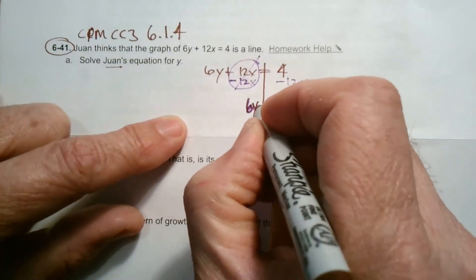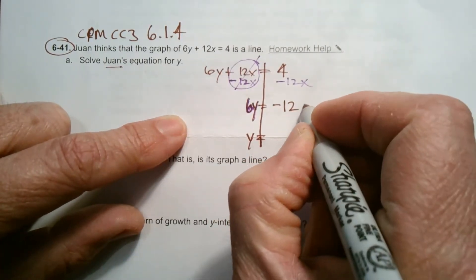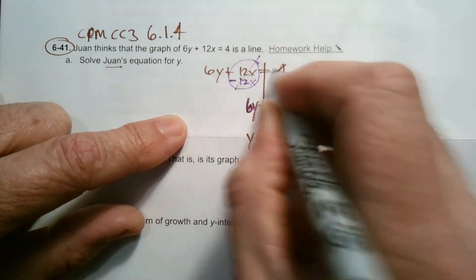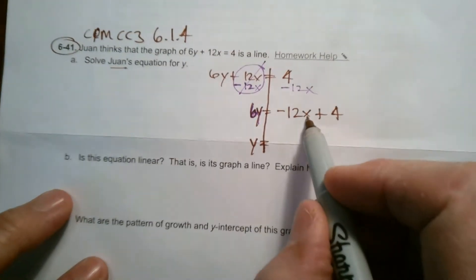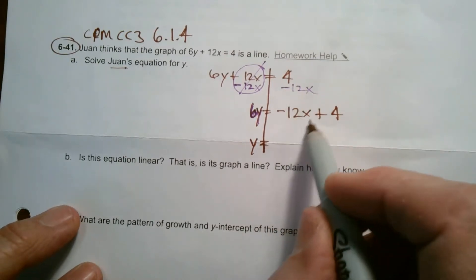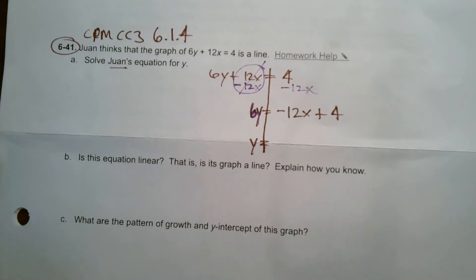So here's what I have so far. I have 6y, that's all that's left over here, is equal to, and I usually put my variable term first, negative 12x plus 4. Those can't combine. You can't add a 4 and a negative 12x because one has an x, the other one's a constant. This is a variable term. That's a constant. Cannot be added.